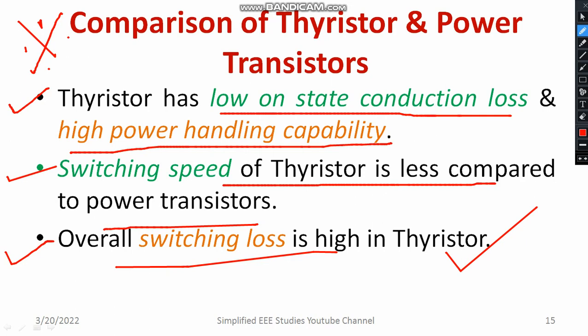Power transistors we already discussed include Power BJT, Power IGBT, Power MOSFET, etc. You can compare transistors with Thyristors based on conduction losses, power handling capability, and operating speed. These are the major differences between Thyristor and power transistor, and this topic can be expected in Viva Voce examinations or semiconductor company interviews.